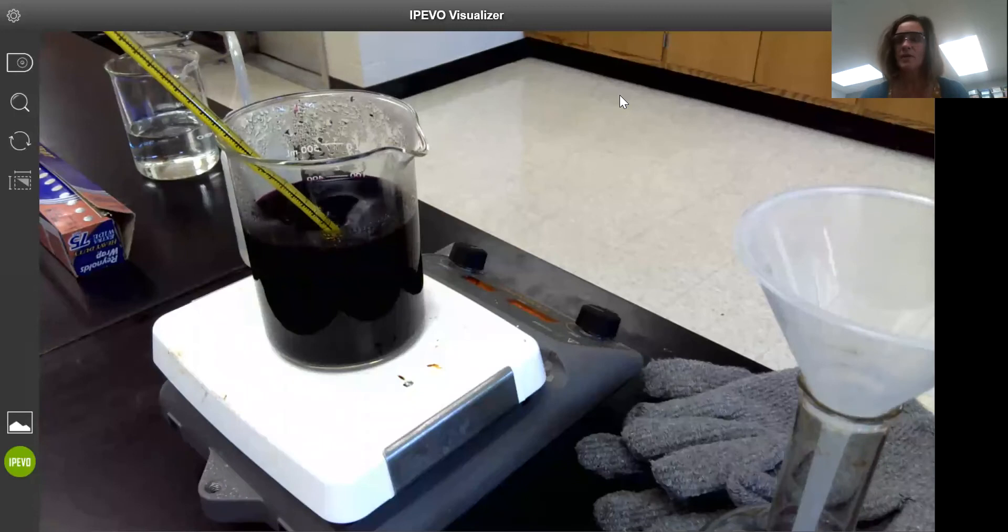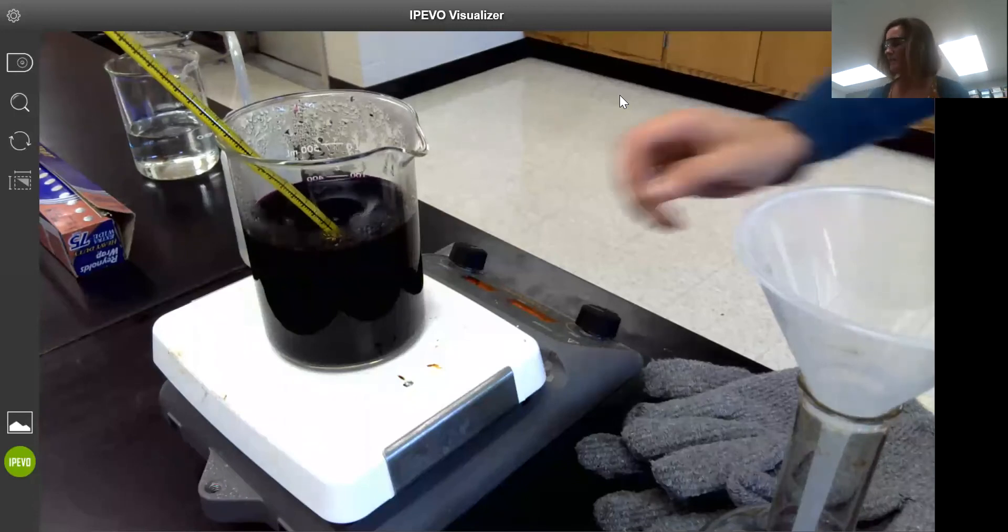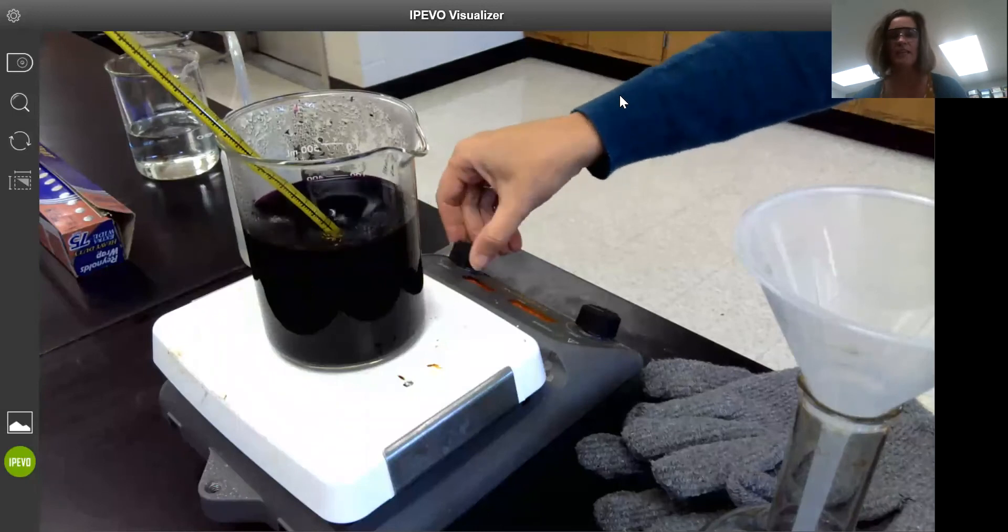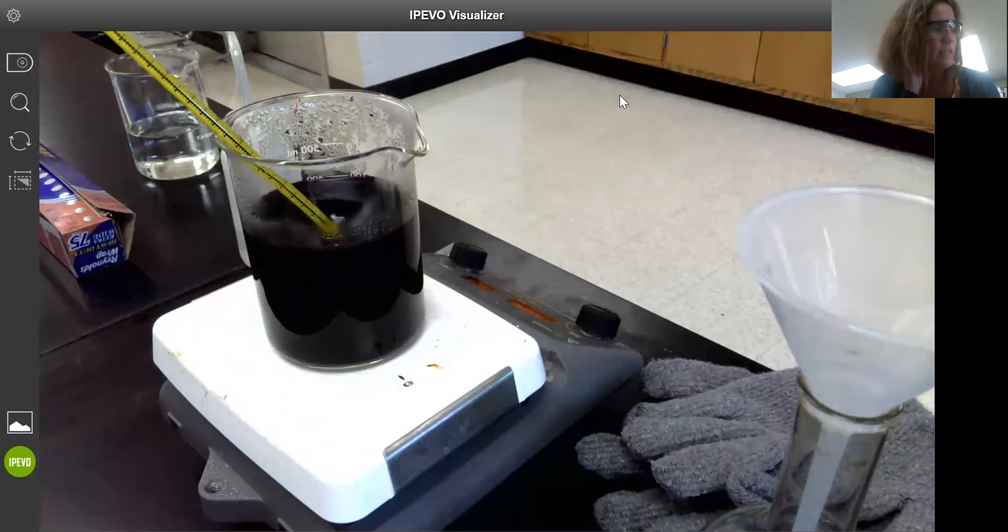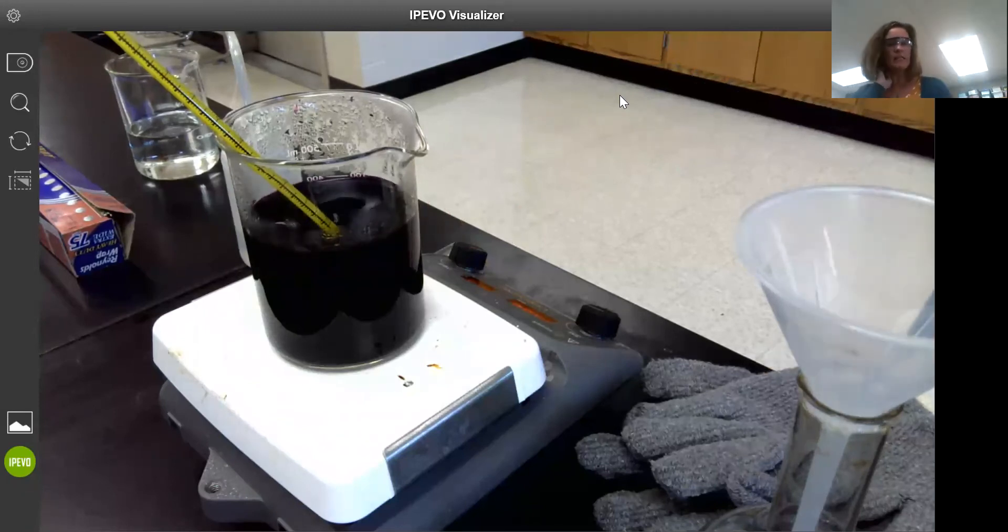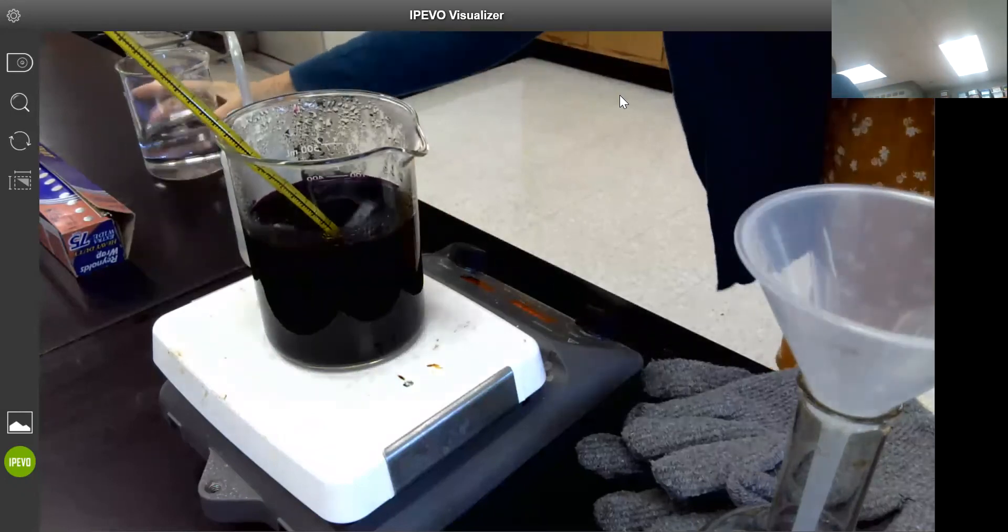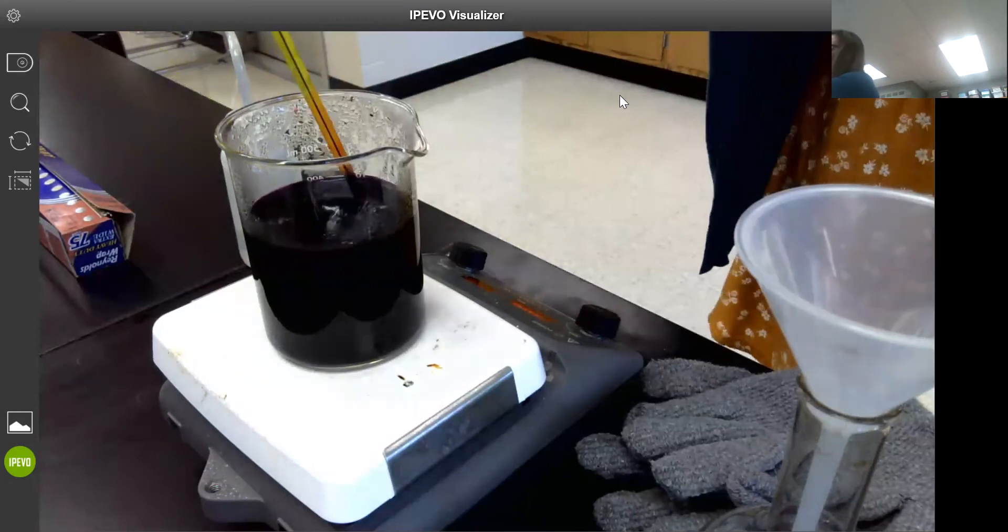The KMnO4 solution has now reached a temperature of 90 degrees, so I'm going to turn off the heat. According to our instructions, I'm going to add some more deionized water to take this up to an approximate volume of 500 milliliters. I'm going to get my thermometer out of there, I don't need that anymore.